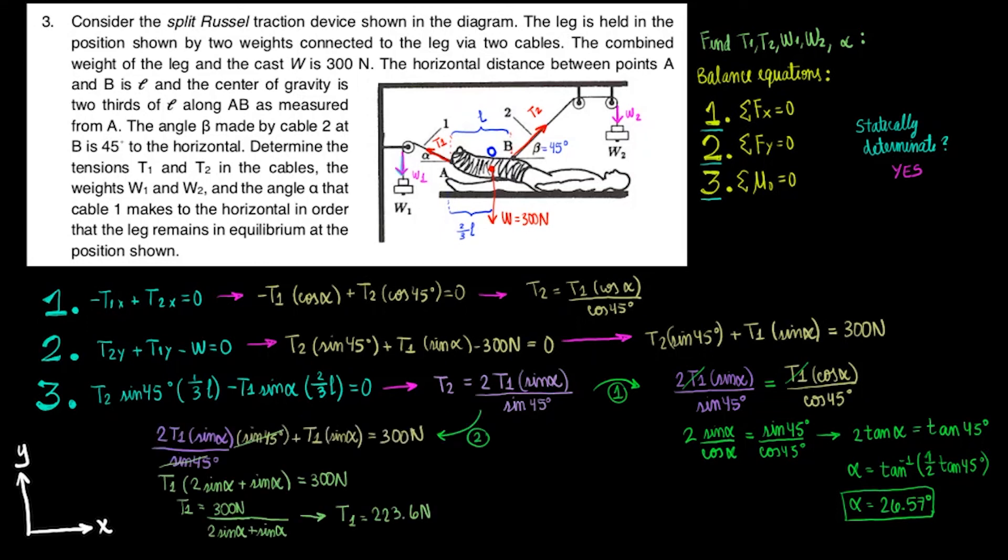We can then use the expression from equation 3, solved for T2, into equation 2 to find T1. Values simplify nicely and we can solve for T1. We learn that T1 equals 223.6 newtons.